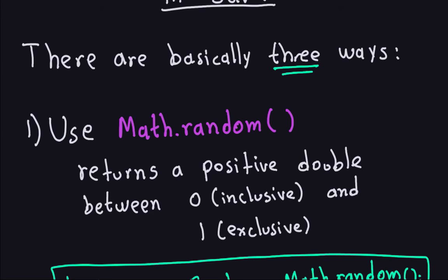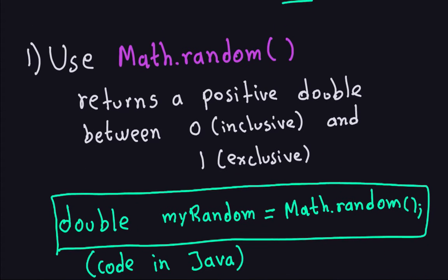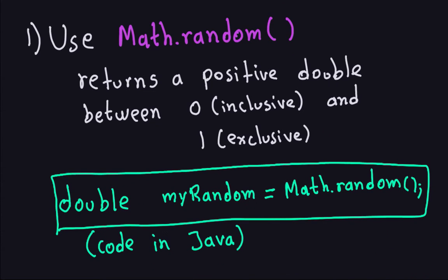So for example, if I were to do something like this — this part in green is the Java code — I define a double variable. I can call it whatever I want; here the name of the variable is 'myRandom', type double, and I make it equal to Math.random(). That gives me a variable 'myRandom' holding a double between 0 inclusive and 1 exclusive.